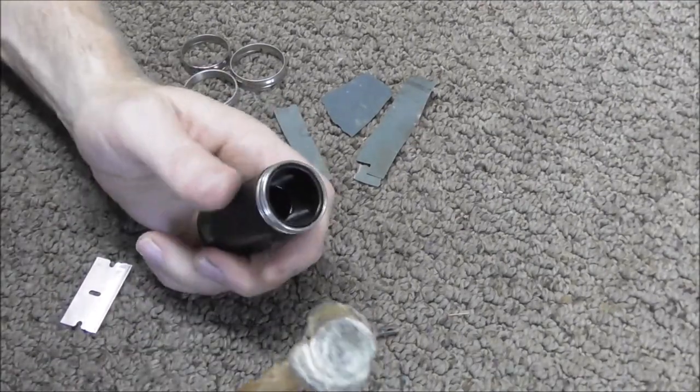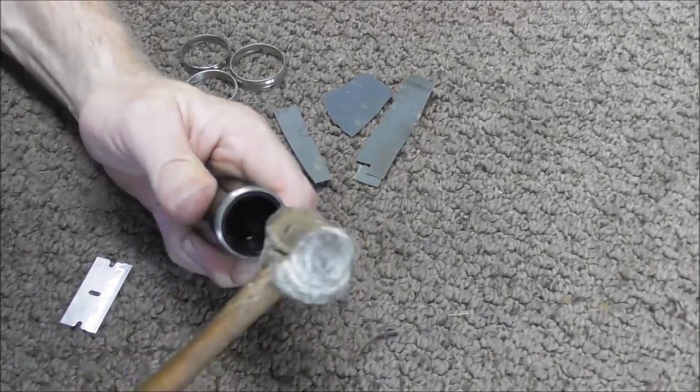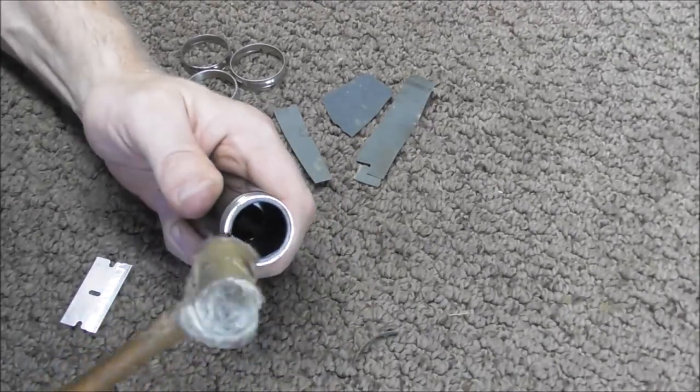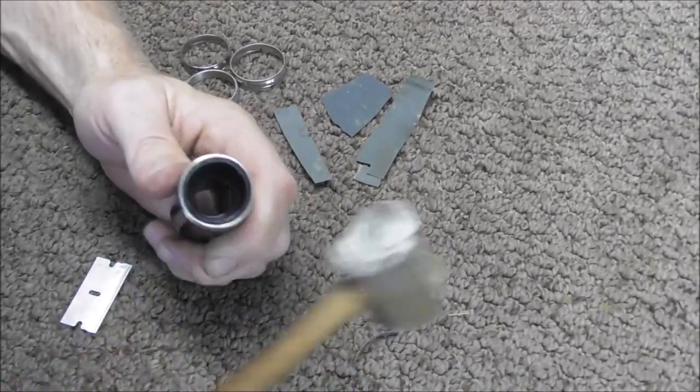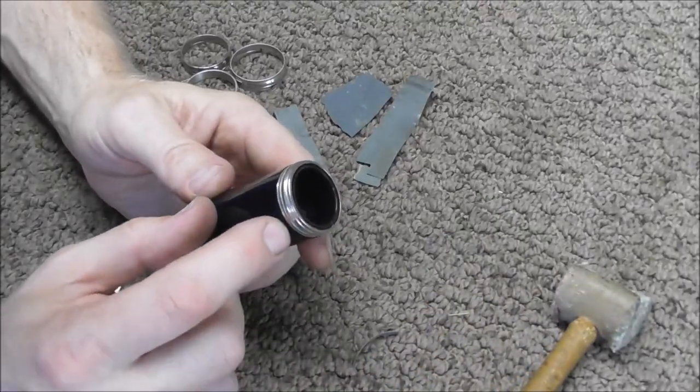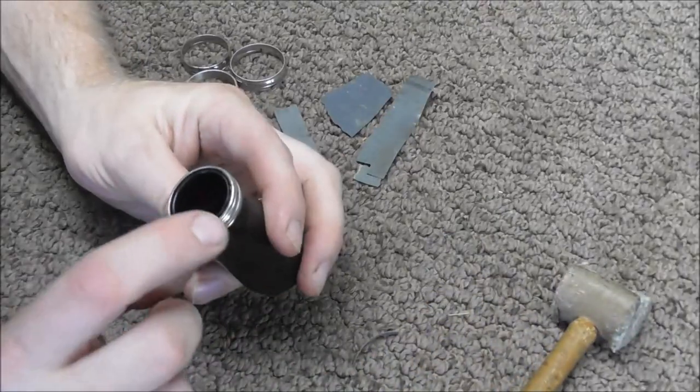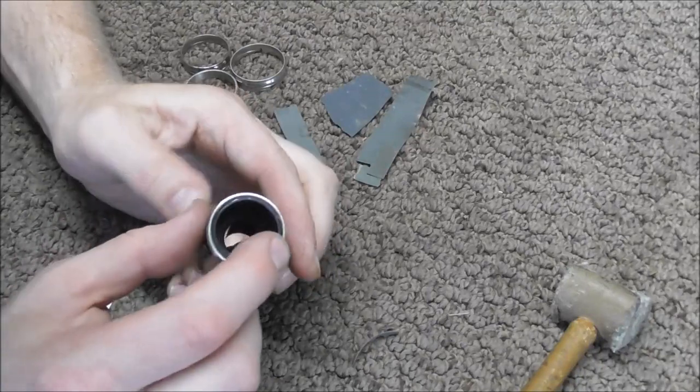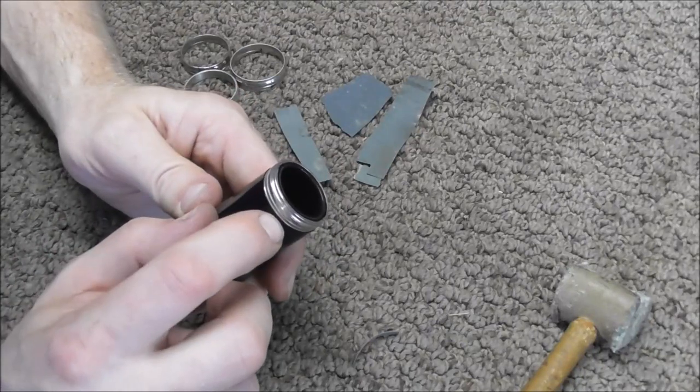After you're done with that you tap the ring in with the rawhide mallet and that is good. The ring is down all the way where it's supposed to be and also you cannot see any sandpaper on the top or in the middle.